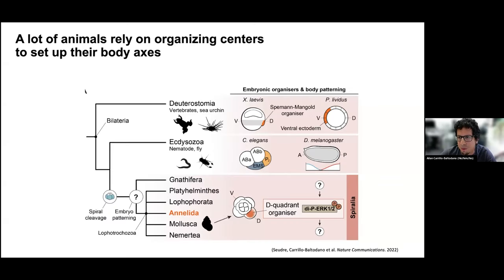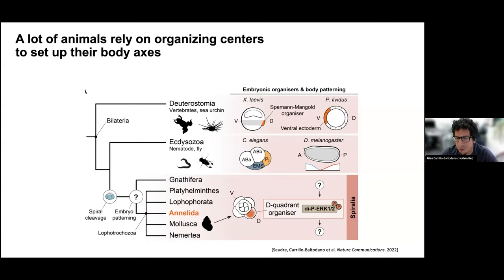Here is just a cartoon of the bilaterian tree of life, showing the big tree groups that are inside bilateria. We have deuterostomes, like the tunicates we heard about in the first talk. What happens in bilateria is that they tend to use a region of the embryo, or sometimes a single cell, that can work as an organizer telling other cells what to do — we call this an organizer center. This is very classically studied in amphibians, such as salamanders and frogs, but it has been found in other animals.